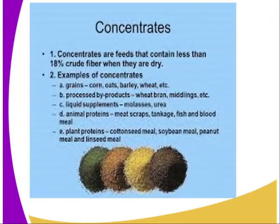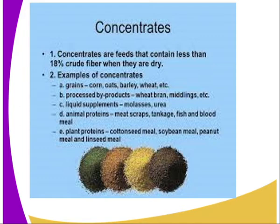Concentrates are feeds that contain less than 18 percent of crude fiber when dry — that is what we refer to as concentrate. Examples of concentrates from grains include maize or corn, oats, barley, and wheat. Those are examples of the first category, that is grain concentrates.